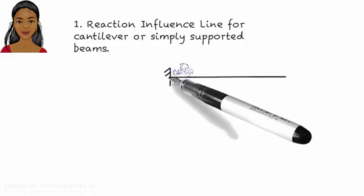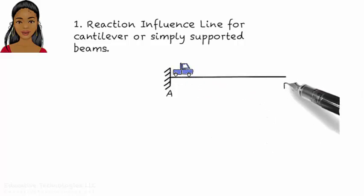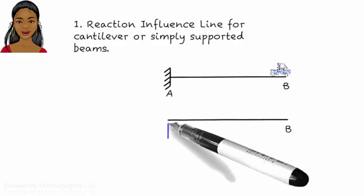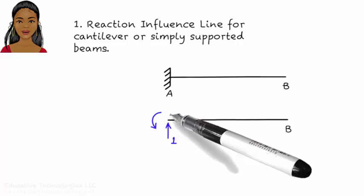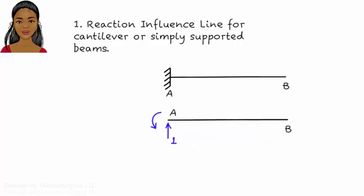Here is a cantilever beam. The vertical reaction at A due to a unit moving load is one. The reaction does not change as the unit load moves across the bridge. So a diagram representing reaction at A due to a unit moving load looks like this.